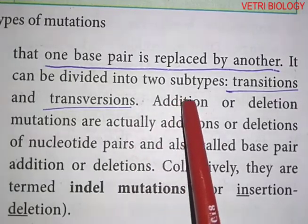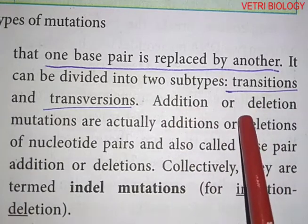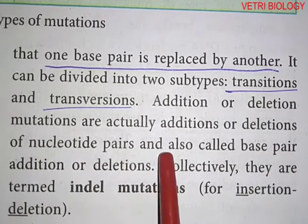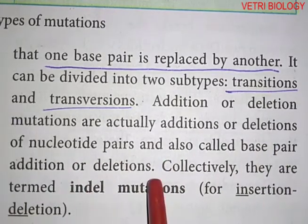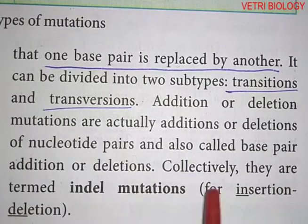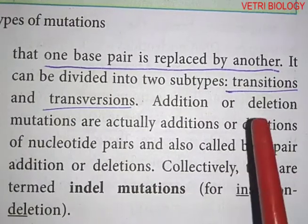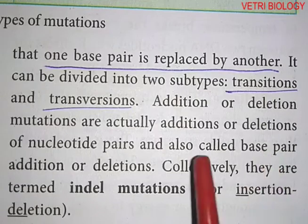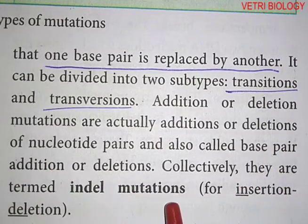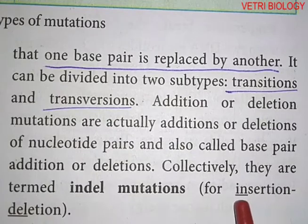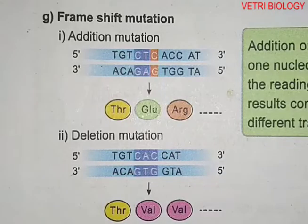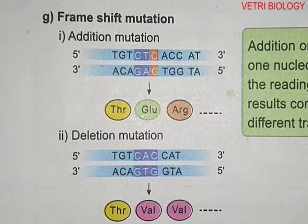The next type of point mutation is addition or deletion. Addition or deletion mutations are actually additions or deletions of nucleotide pairs and are also called base pair additions or deletions. Collectively, they are termed indel mutations. Point mutations thus include substitution mutations as well as insertion and deletion mutations.